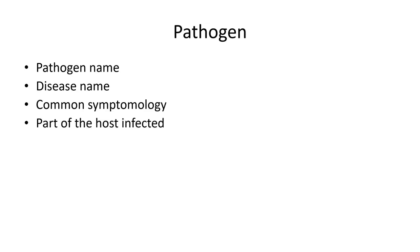You're also going to look at the part of the host infected. There are things that are going to be found on the skin, in the GI tract, in the reproductive system, or in a lot of different places. So you're going to come back with the part of the host that is infected. Then you're going to look at the mode of transmission — how does it go from one individual to the next? This is an important thing to understand because figuring out how it gets transmitted allows us to look at how to control these things.